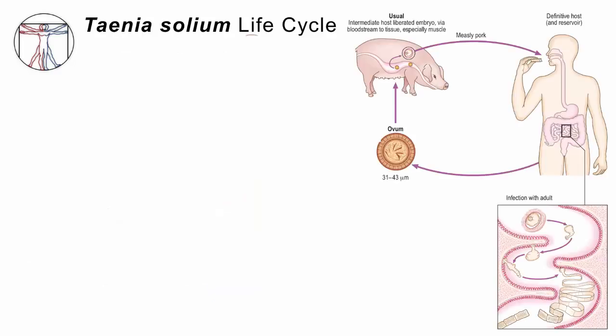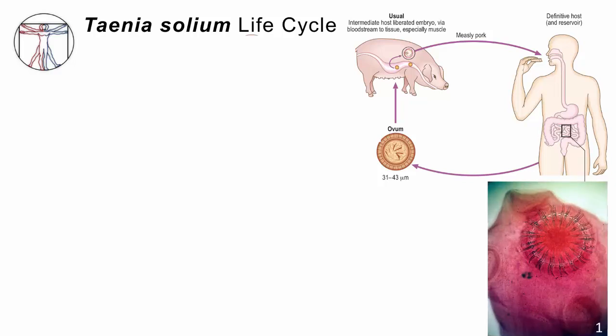Here's the life cycle. It starts in the upper right-hand corner when a person consumes undercooked pig flesh. In the flesh of the pig there are cysts, and each cyst contains the invaginated, folded-up head of a worm. That hunk of meat gets into the stomach, the stomach acid starts to digest the pig flesh, and somehow the invaginated protoscolex survives that, makes its way into the intestines, pops open, hatches, and sucks down onto the intestinal mucosa, and starts to grow its long chain of tails.